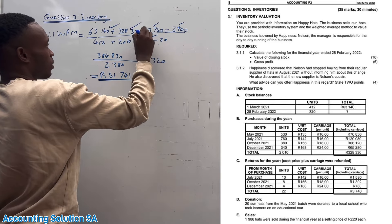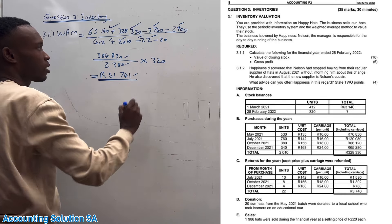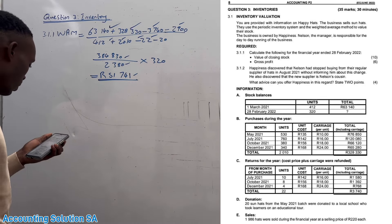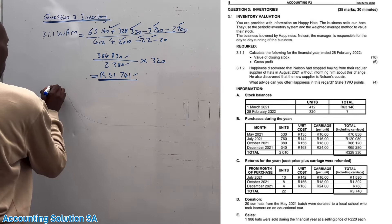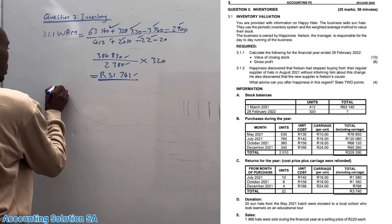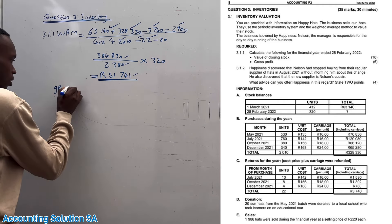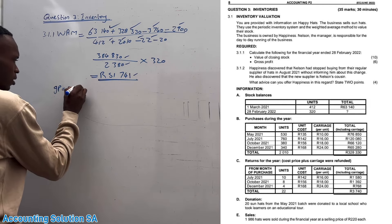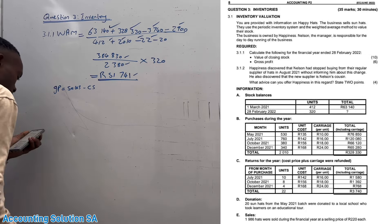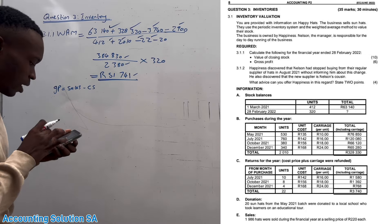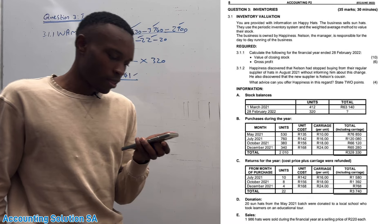If you do this correctly it gives you 10 marks — a lot of marks are here, so make sure you show everything. The next question requires us to calculate gross profit. The formula is: sales minus cost of sales.